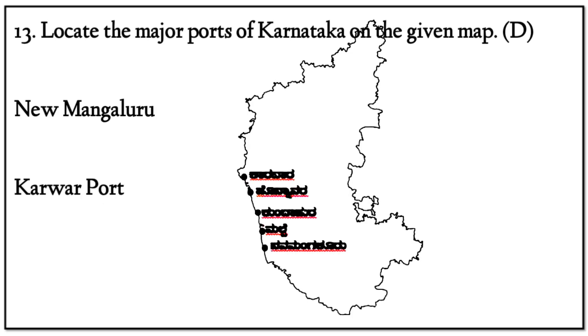Question 13: Locate the major ports of Karnataka on the given map. The ports include New Mangaluru and Karwar port. Looking at the map, the locations are: Karwar, Honnawar, Kundapur, Melpe, and New Mangaluru.